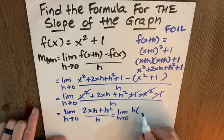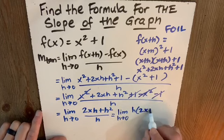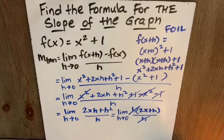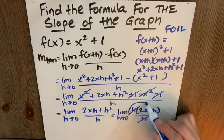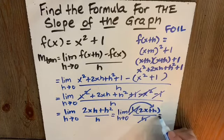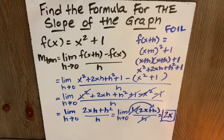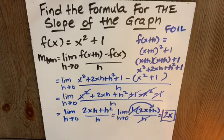I can factor out an h in the numerator. I'm left with 2x plus h over h. Because I have multiplication there, I can cancel. And now with my surviving function, I can substitute in the 0 and I get 2x. So that is my slope of the tangent at any point on the curve. I found it.